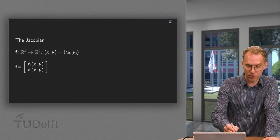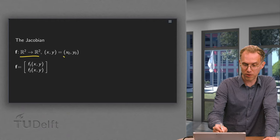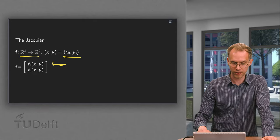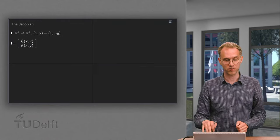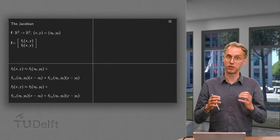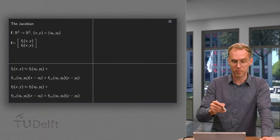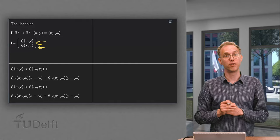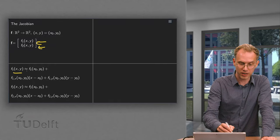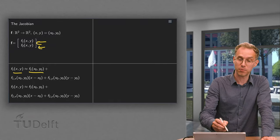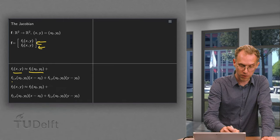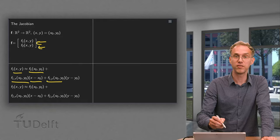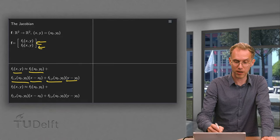Suppose we have some function from R² to R² and some point (x₀, y₀), and this function has two components. What we are going to do first is linearize this function. We have basically two functions of two variables and we will linearize both of them. So f₁ equals f₁ at the point (x₀, y₀) plus the partial derivative with respect to x times (x minus x₀) plus the partial derivative with respect to y times (y minus y₀).